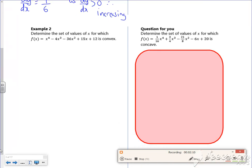Example two says, determine the set of values for which it's convex. So I know it's convex if f double dashed is greater than or equal to 0.